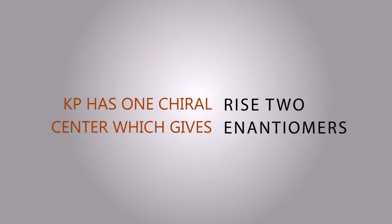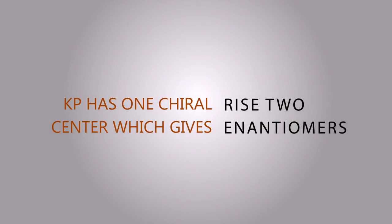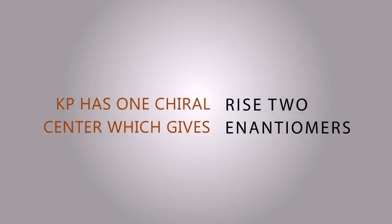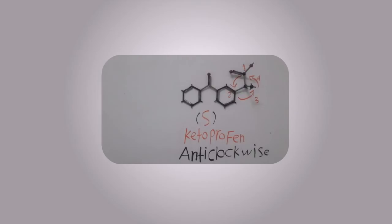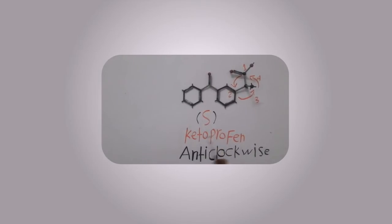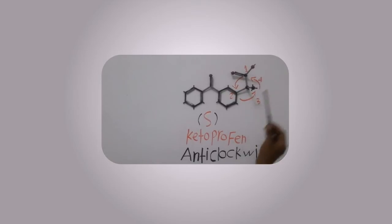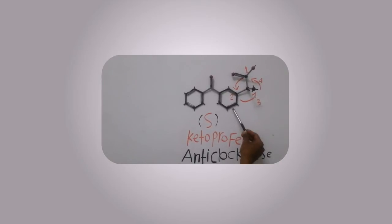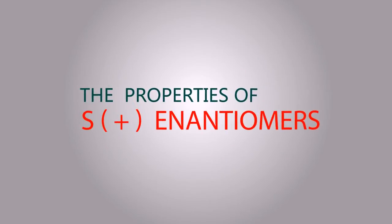Ketoprofen gives rise to R and S enantiomers and they possess different biological activities. The first is S enantiomer. This is the first form of isomer ketoprofen. It's called S ketoprofen. We call it S because it is anticlockwise. See there, the carboxyl group has the highest atomic number, then benzene ring, then methyl group, and finally the hydrogen atom.